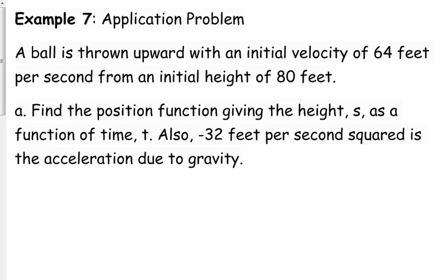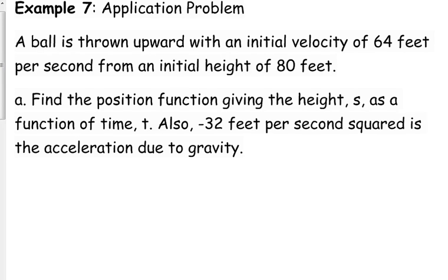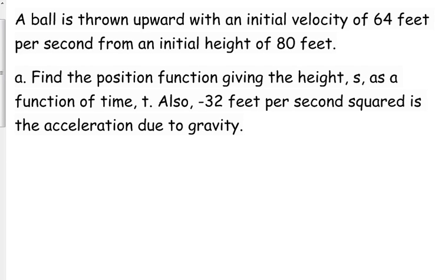Part A says find the position function giving height S as a function of time. Also, negative 32 feet per second squared is the acceleration due to gravity. We've done some of these projectile motion problems before, but we've never had to completely do it from scratch. Remember we had that equation that was like negative 16t squared plus the initial velocity times t plus the initial height.